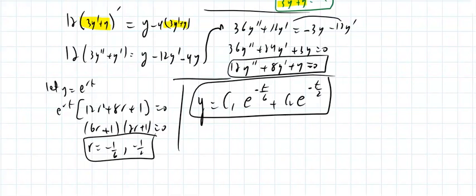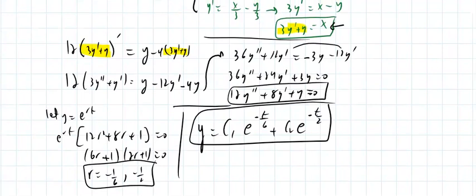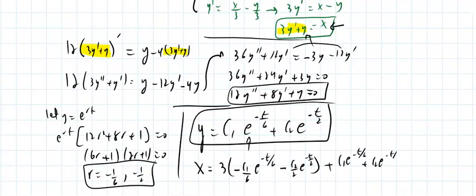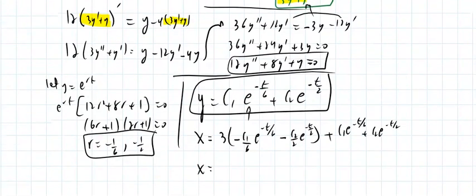Now that I know this, I use my substitution. x is 3 times y prime, which is negative c1 over 6 times e to the negative t/6 minus c2 over 2 times e to the negative t/2, plus y. So x equals one half c1 e to the negative t/6 minus one half c2 e to the negative t/2.